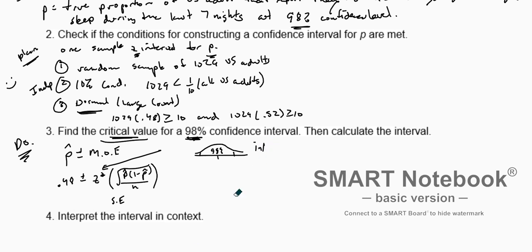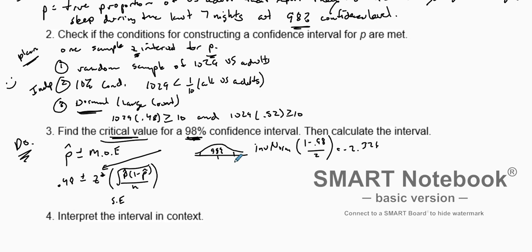For 98 percent confidence, we use inverse norm on the calculator. We take (1 − 0.98) / 2 because inverse norm uses percentiles and we want one percent in each tail. When we punch that in, we get approximately negative 2.326. We don't need the negative — we just use the positive portion. So our critical value Z* for a 98 percent confidence interval is 2.326.